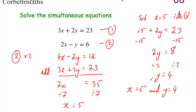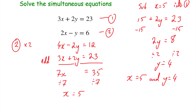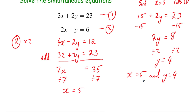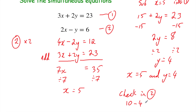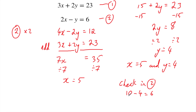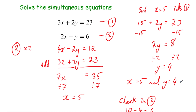Whenever I'm doing simultaneous equations, I like to check my answer. Because we've got x equals 5 and y equals 4, and we haven't used equation 2 to substitute into yet, let's check in equation 2. So 2x: 2 times 5 equals 10. Then subtract y, which is 4. That should equal 6. And 10 minus 4 is 6. So we get 6 equals 6, confirming we're right. We've solved these simultaneous equations with x equals 5 and y equals 4.